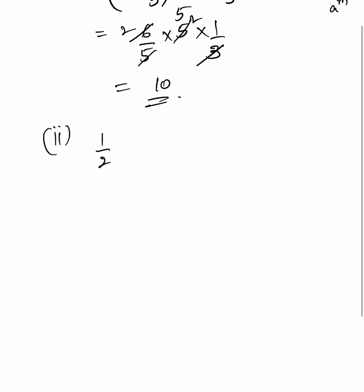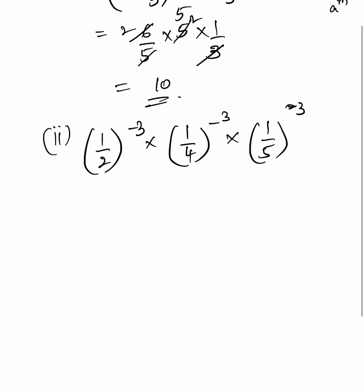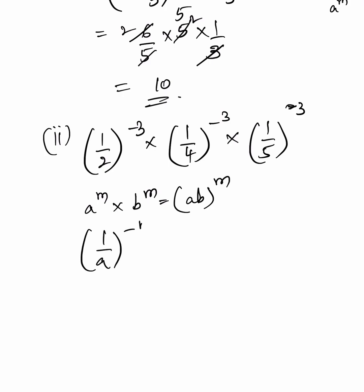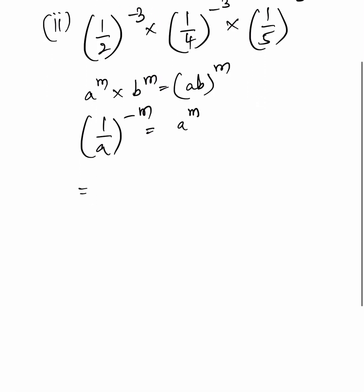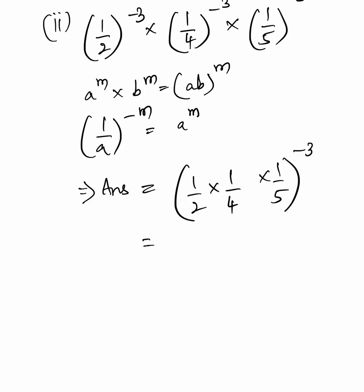Second part: 1 by 2, whole power minus 3, into 1 by 4, whole power minus 3, into 1 by 5, whole power minus 3. We know that a power m into b power m equals a b whole power m, and 1 by a whole power minus m equals a to the power of m. Using these two formulae, the answer is 1 by 2 into 1 by 4 into 1 by 5, whole to the power of minus 3, that is equal to 1 by 40 whole power minus 3, which equals 40 cube.